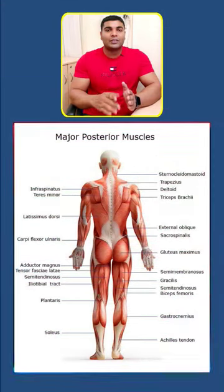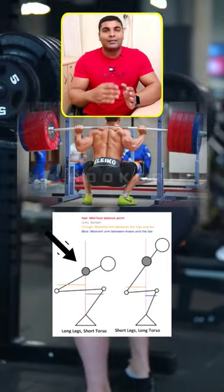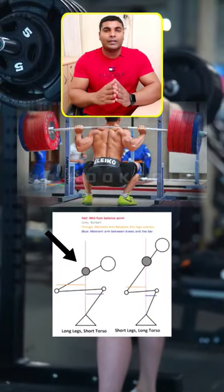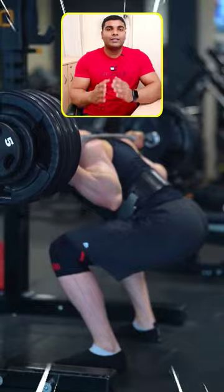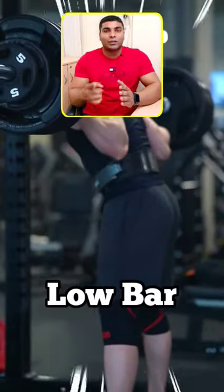Now, because your posterior chain muscles are more involved and your back angle is more horizontally lean forward, which means you can lift heavy as compared to high bar squat.